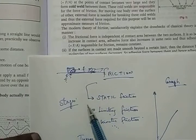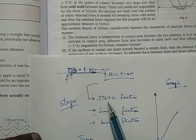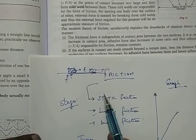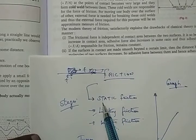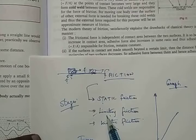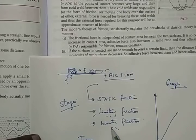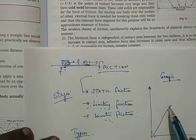So these are stages of friction, not types of friction. The first stage is static friction, the next stage is limiting friction just before it starts moving, and then the last part is kinetic friction.